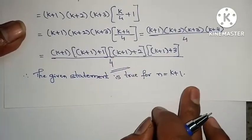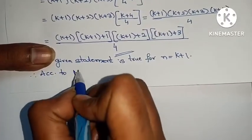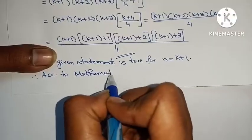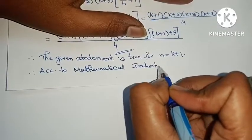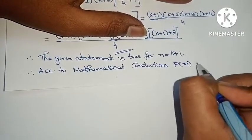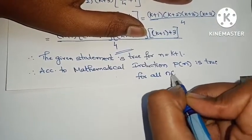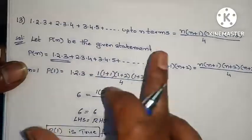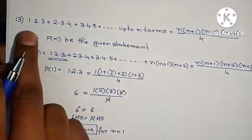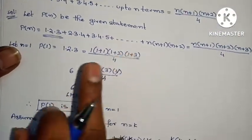Therefore, according to mathematical induction, P of n is true for all n belonging to natural numbers. Problem is complete. In this statement P of n: first n equals 1 was substituted, LHS equals RHS, P of 1 is true. Then n equals k is assumed true, and n equals k plus 1 was proved true.